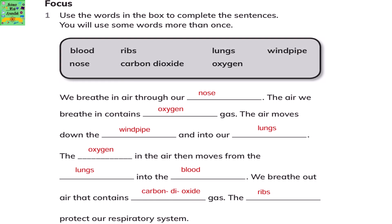Use the words in the box to complete the sentences. You will use some words more than once. This is a short passage about the respiratory system. We breathe in air through our nose. The air we breathe in contains oxygen gas.